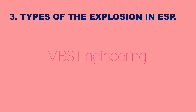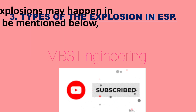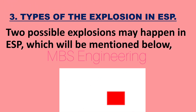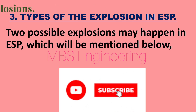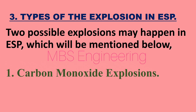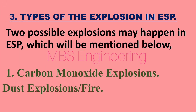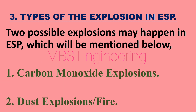Next, we will look at the types of explosions in the ESP. Two possible explosions may happen in an ESP. The first possibility is carbon monoxide (CO) explosions. The second possibility is dust explosions or fire.